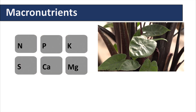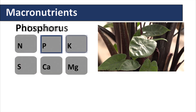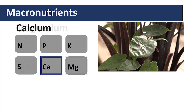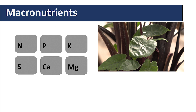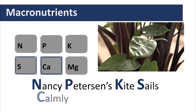The macronutrients are nitrogen, phosphorus, potassium, sulfur, calcium, and magnesium. The best way to remember these is by the phrase: Nancy Peterson's kite sails calmly and magnificently.